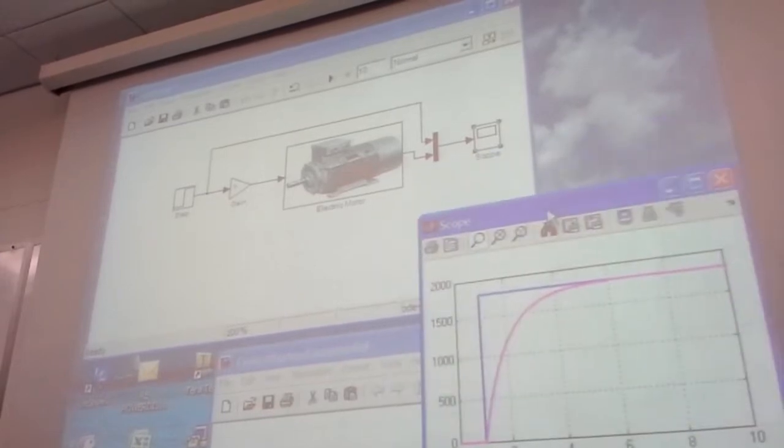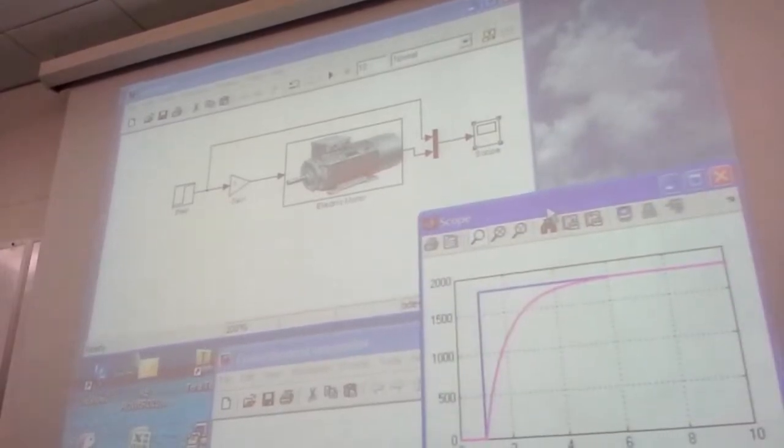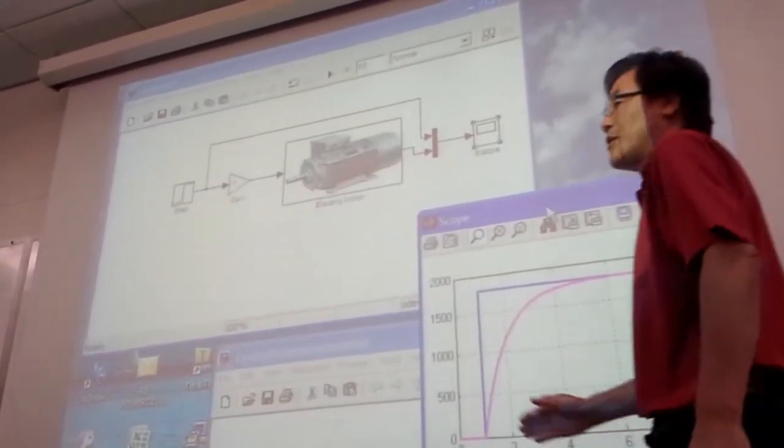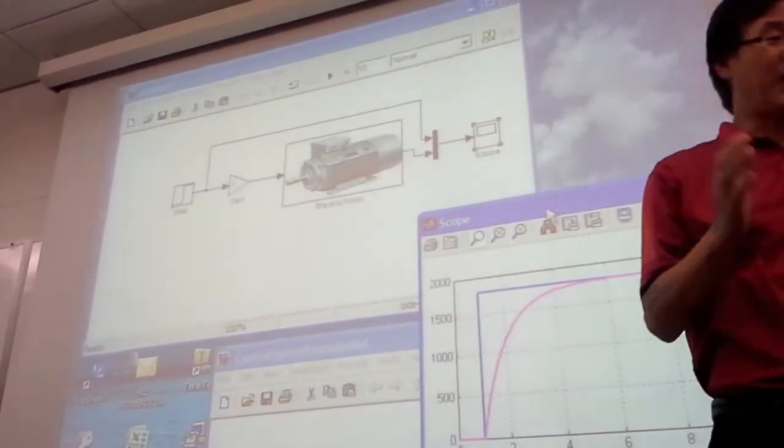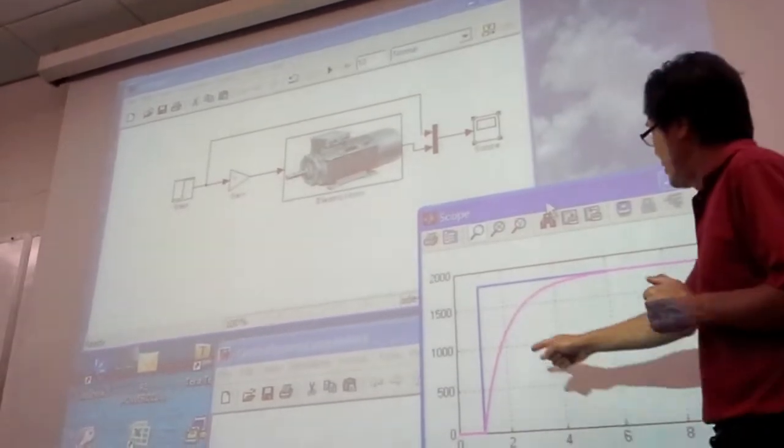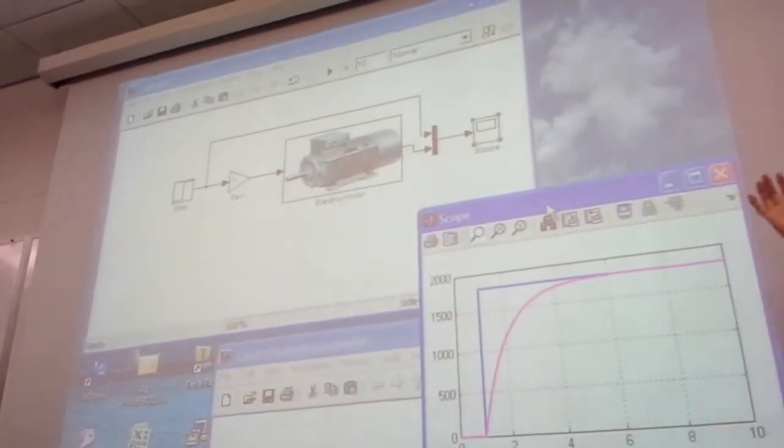So you're going to have to snap it. So this is an open loop. Right? So I give some stats. And check it out. So 1800, that's good.